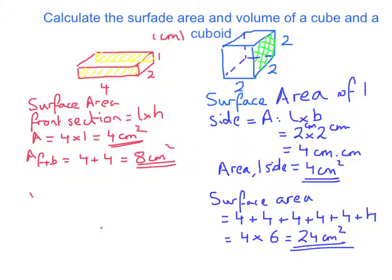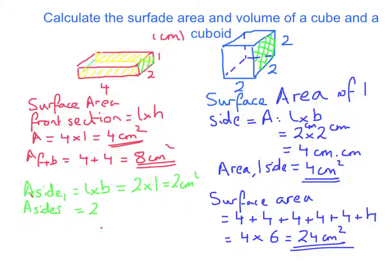Next, the two end sides. The surface area of one side equals breadth times height, which is 2 centimetres times 1 centimetre equals 2 centimetres squared. That was the area of side 1 only, so the area of both sides is 2 plus 2 equals 4 centimetres squared.